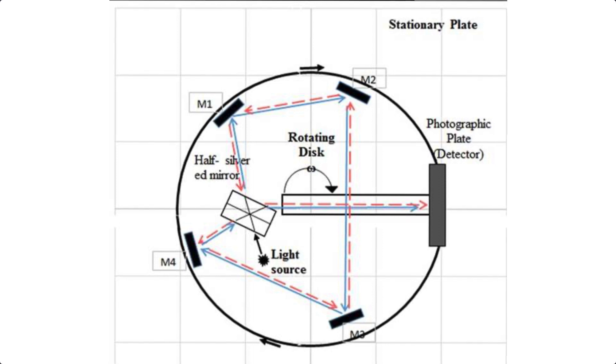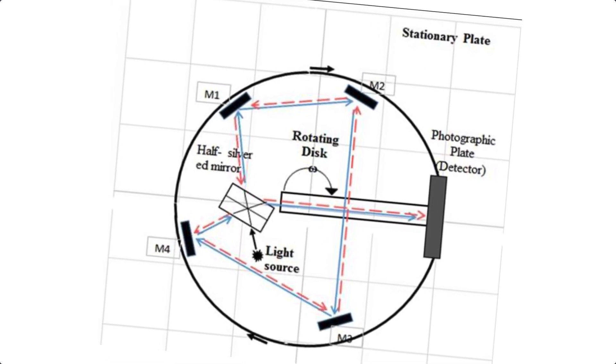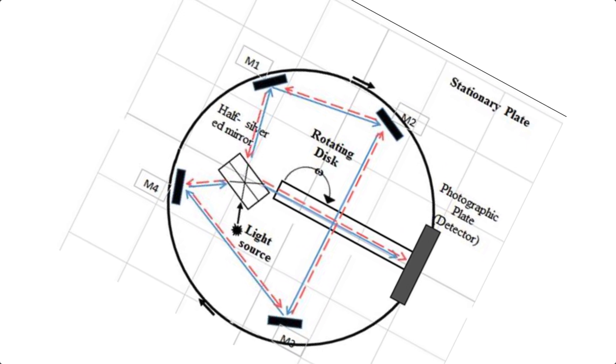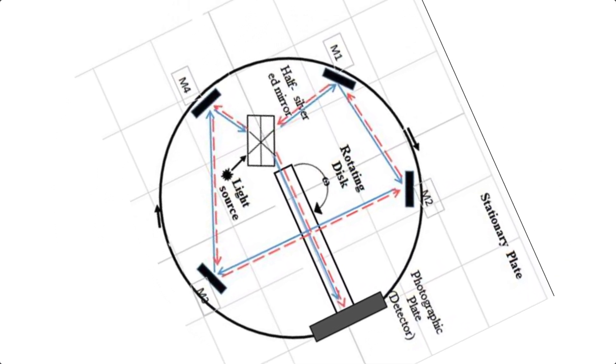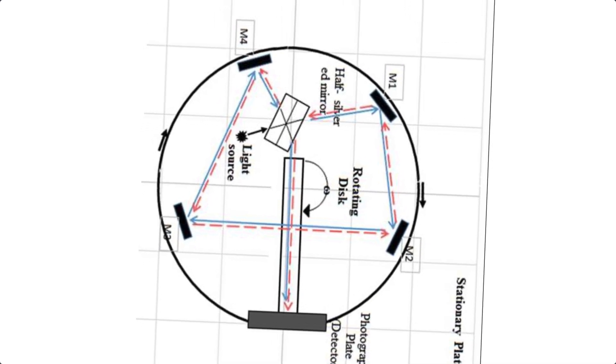The light travelling in the same direction as the rotation was catching up the retreating interferometer at speed c minus v. The light travelling in the opposite direction was meeting the approaching interferometer at c plus v. Sagnac took this as proof that the aether exists and light does not always strike an observer at the same speed. Relativity believers said this was not a disproof of Einstein because the apparatus was turning and was not an inertial frame of reference — I think you can take that excuse with a pinch of salt.